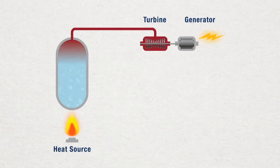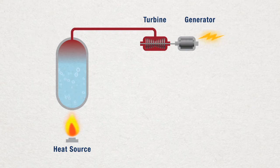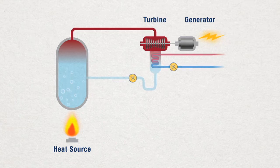Most generating stations use steam to turn a turbine and make electricity. Once through the turbine, steam must be condensed back into water so it can recycle through the system. This takes place inside a condenser.